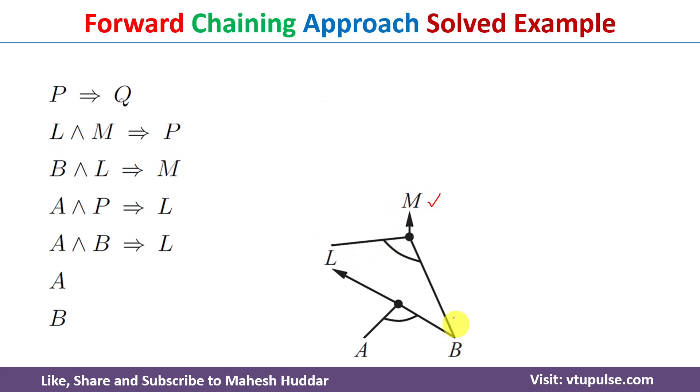We can notice here L and B were combined to get M in this case. Now M is itself true. What we do is we will select another rule so that we will be able to prove Q here.